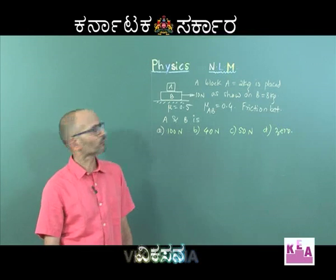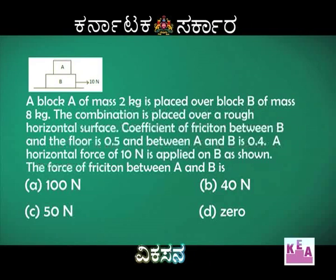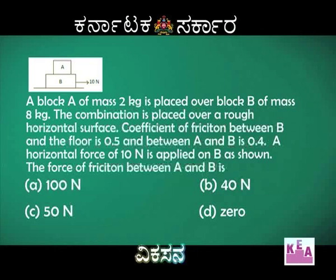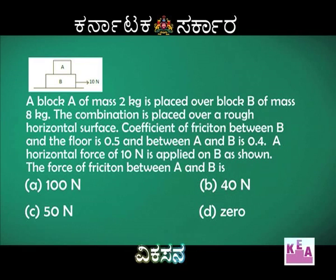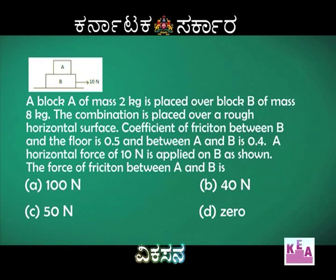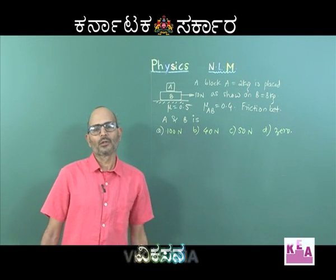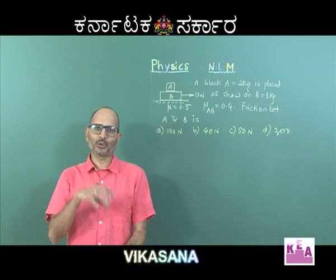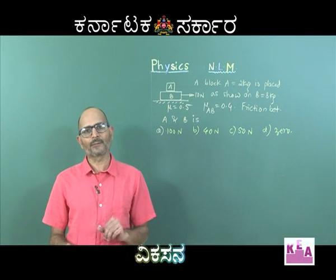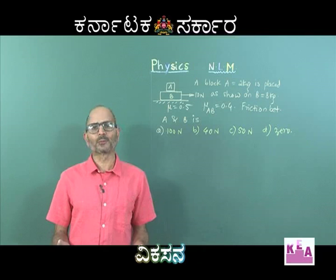One more problem on friction. A block A of mass 2 kg is placed on another block B of mass 8 kg, both placed on a rough horizontal surface. The friction between block B and the surface is 0.5, and the friction coefficient between the two blocks is 0.4. Find the frictional force between A and B when a 10-newton force is applied on B. The key insight is: if both bodies move, they should move together, because no force is applied on the upper body A.